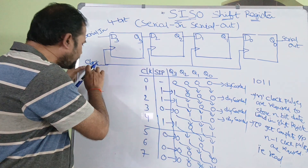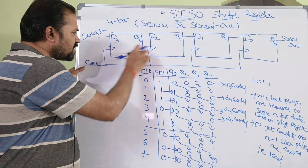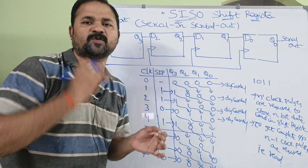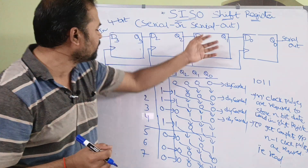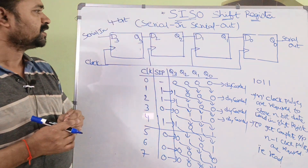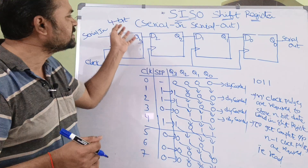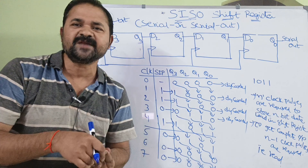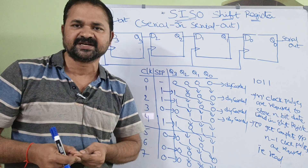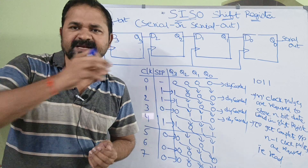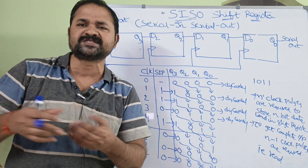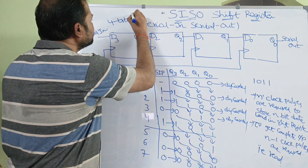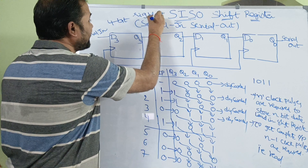Here this is the clock pulse, and we must apply clock pulse on all the flip-flops. Now, this is a shift-right register. We can perform two operations on the shift registers — either we can shift the bits towards the left or towards the right. This is an example of a 4-bit shift-right register.